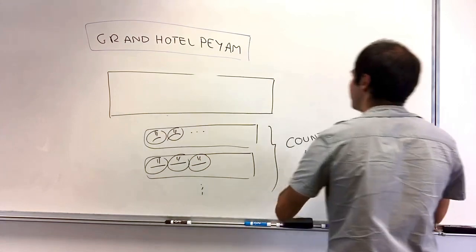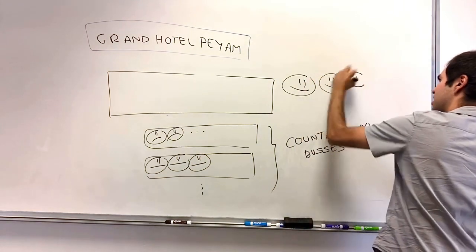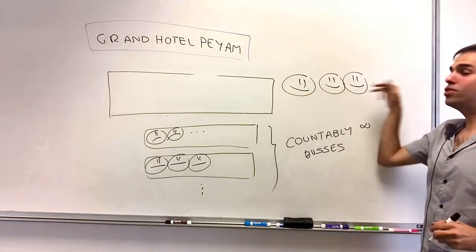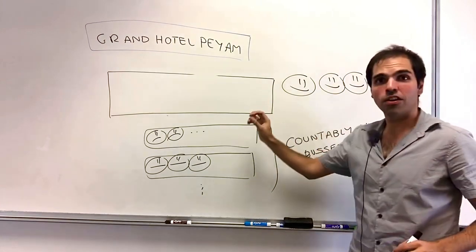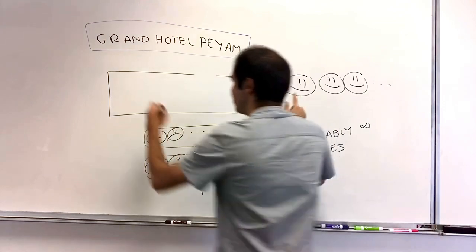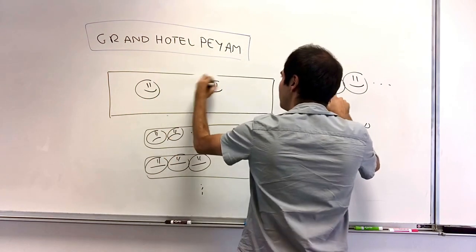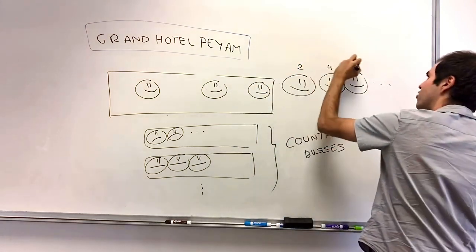So you still have this original passengers, original hotel guests. And look, those hotel guests, the original ones, put them in rooms that are powers of two. So the first guest goes in room two, the second guest goes in room four, and then room eight, et cetera. So two, four, eight.